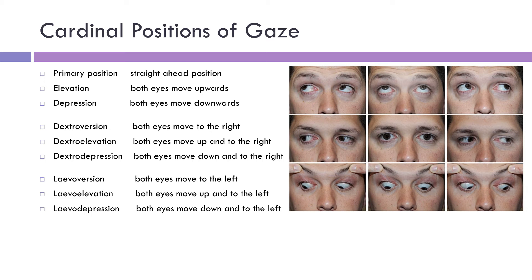Looking at the photographic images, the patient looking straight ahead is known as the primary position. Where the patient looks up, we're assessing elevation, and where the patient looks down, we're assessing depression. Over here we have the patient looking into right gaze, which is called dextroversion.